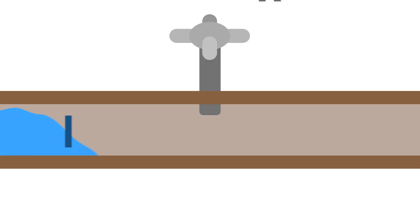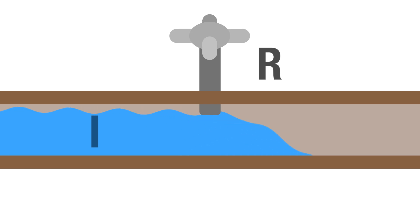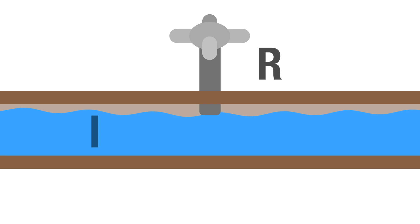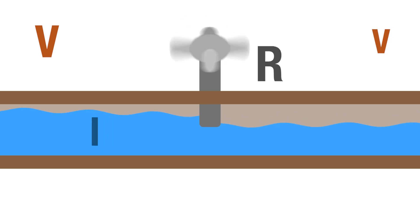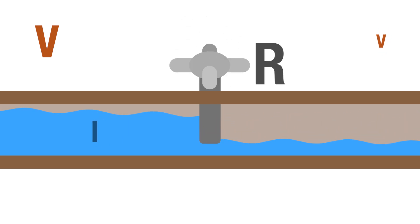If we force a current through a resistor — in this case a valve — and the valve is open, the current sees a low resistance and subsequently a low potential difference, i.e. voltage, across its terminals. Now if we tighten that valve, we increase the resistance and not as much current flows. However, the potential difference in pressure across this terminal increases.